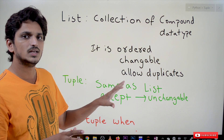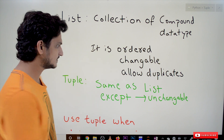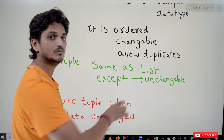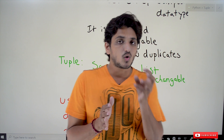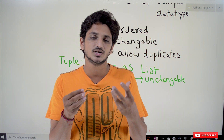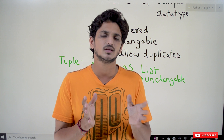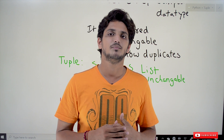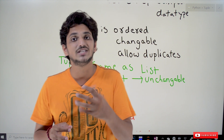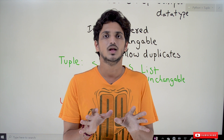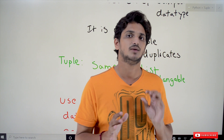Tuple is exactly the same as list, but the only difference is tuple is unchangeable, meaning immutable. A clear discussion about mutable and immutable objects was covered in our previous class. So tuple is an immutable object. Whenever you don't want to change your data, use tuple. If you want to change your data, use list. That's the only difference between list and tuple.